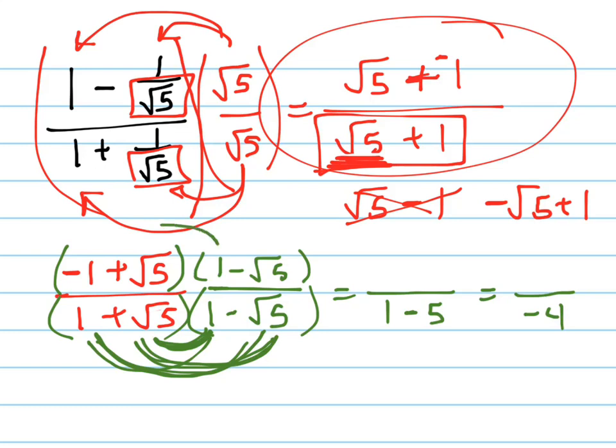Now let's take care of the numerator. 1 times negative 1 is negative 1, plus root 5, plus another root 5, because a negative times a negative is a positive, minus root 5 squared, which is 5. These things add together to give you negative 6. These things add together to give you 2 root 5.